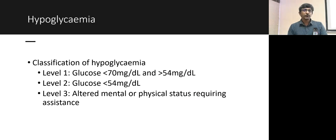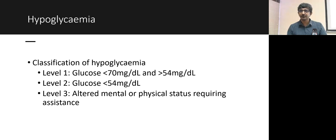For hypoglycemia classification: level 1 is glucose 54 to 70 mg/dL; level 2 is below 54 mg/dL without symptoms; level 3 is hypoglycemia with altered mental or physical status requiring medical assistance.